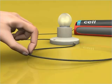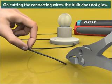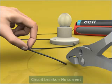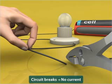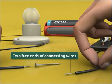Now let us cut any one of the connecting wires. We observe that the bulb does not glow this time. This happens because the circuit breaks and electric current stops flowing through it. So we now have two free ends of connecting wires.